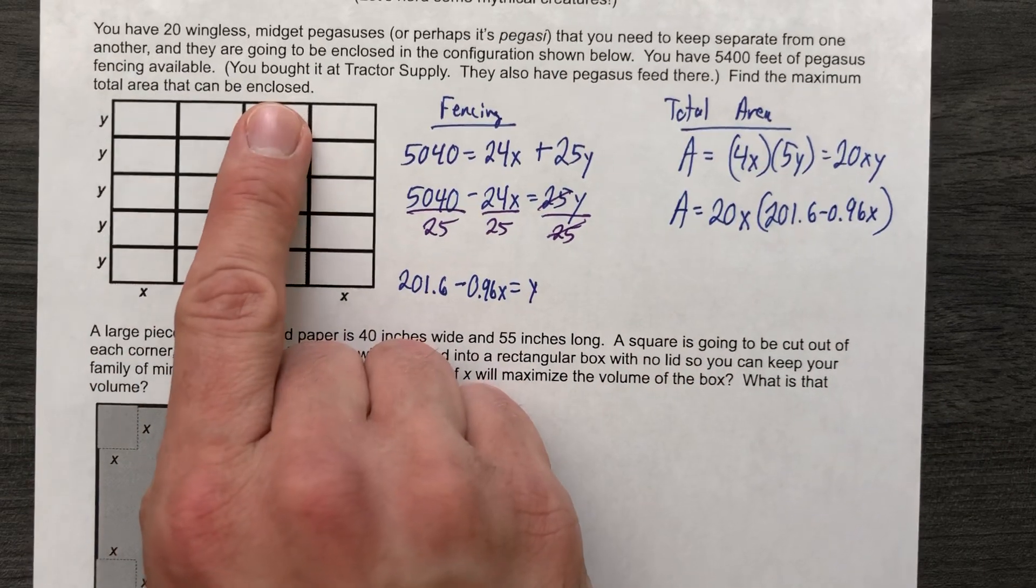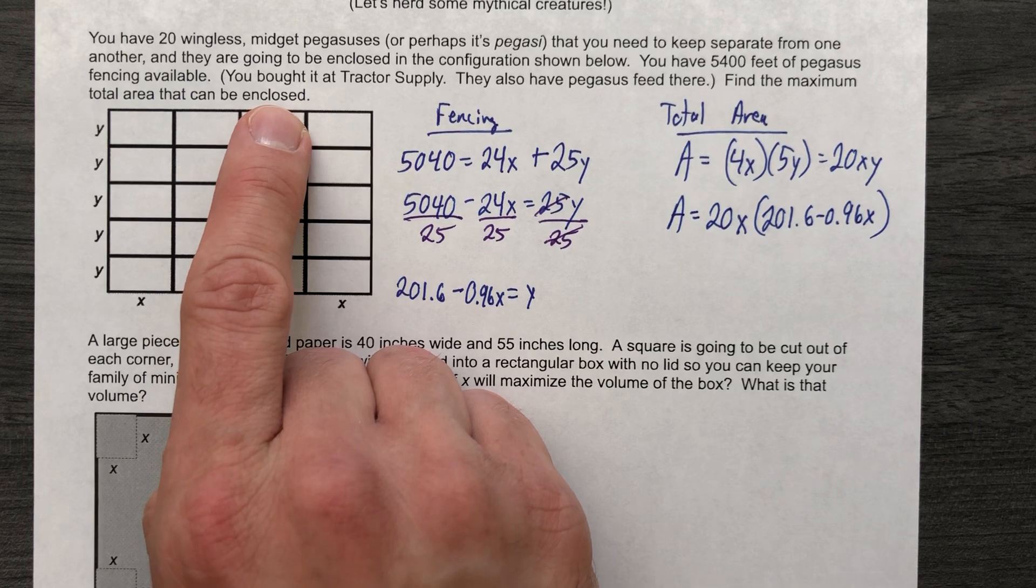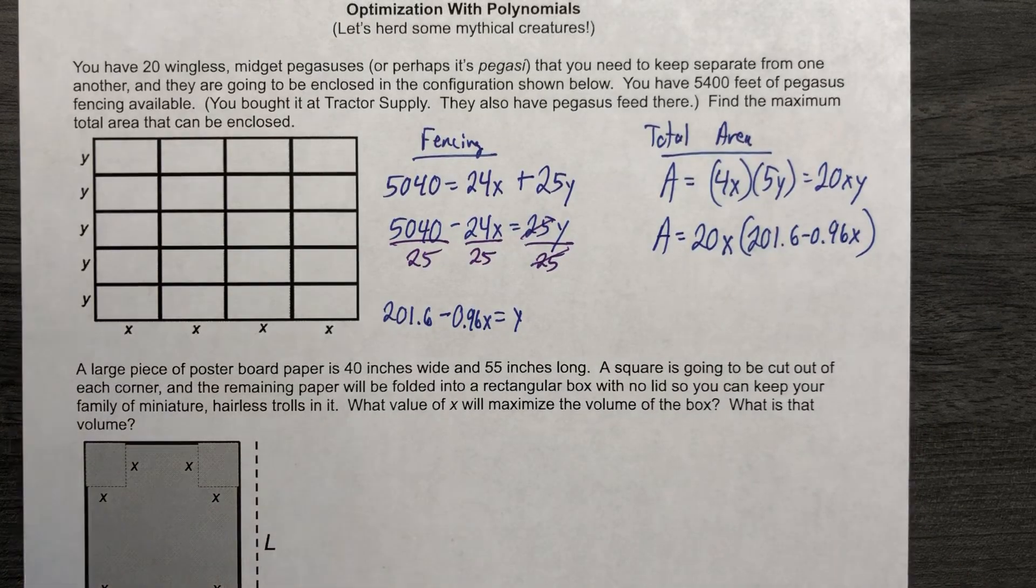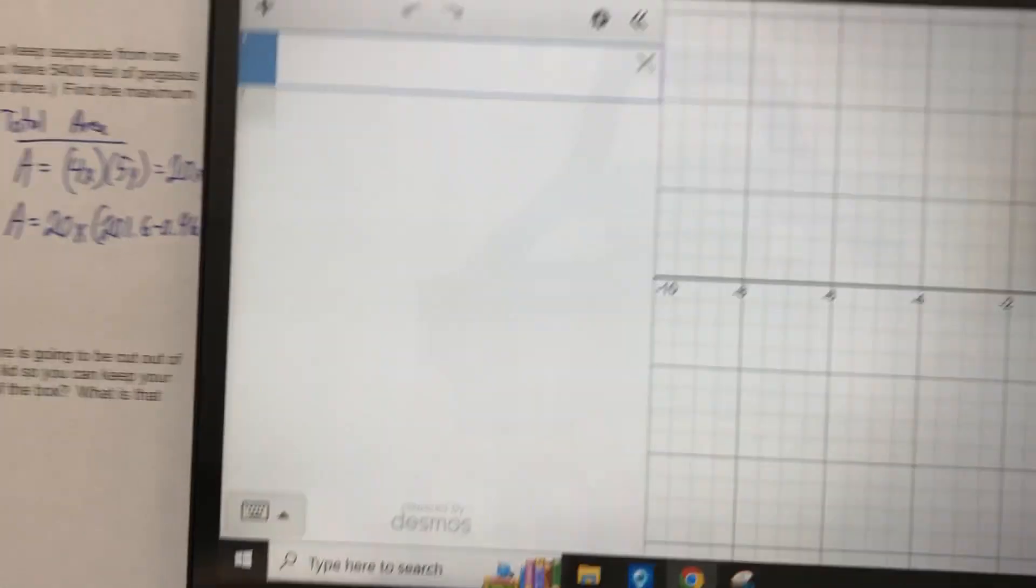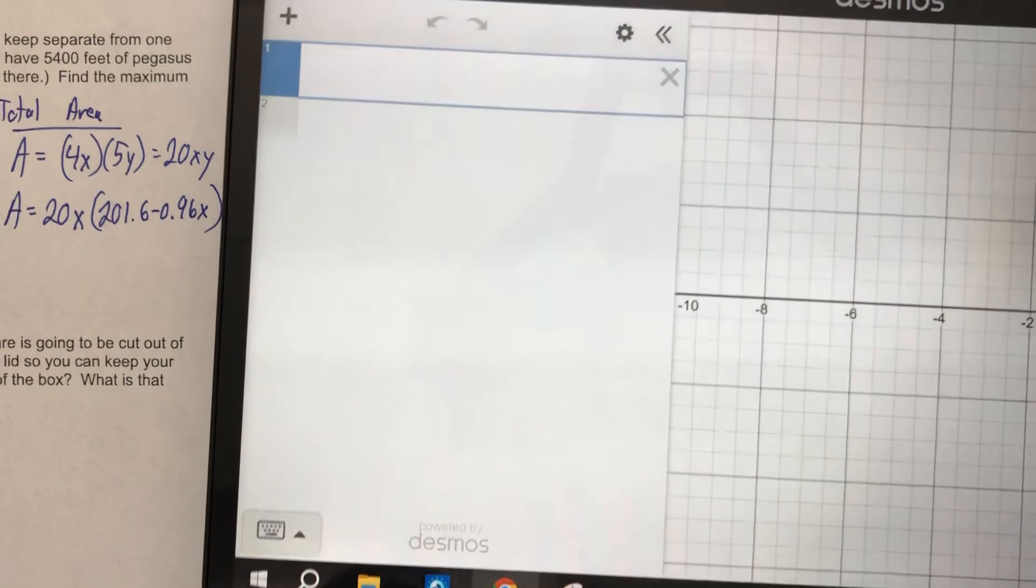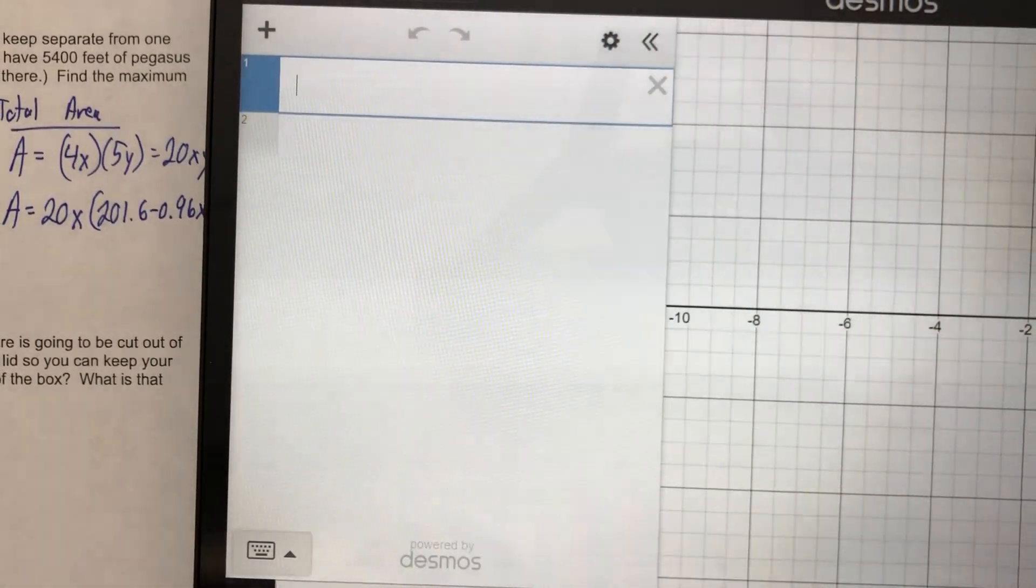Now, when I graph that, my input is going to be the X values and my output is going to be the area, total area. I want to maximize the total area. So when I graph this, I'm looking for the highest output I can find. So let's graph it.